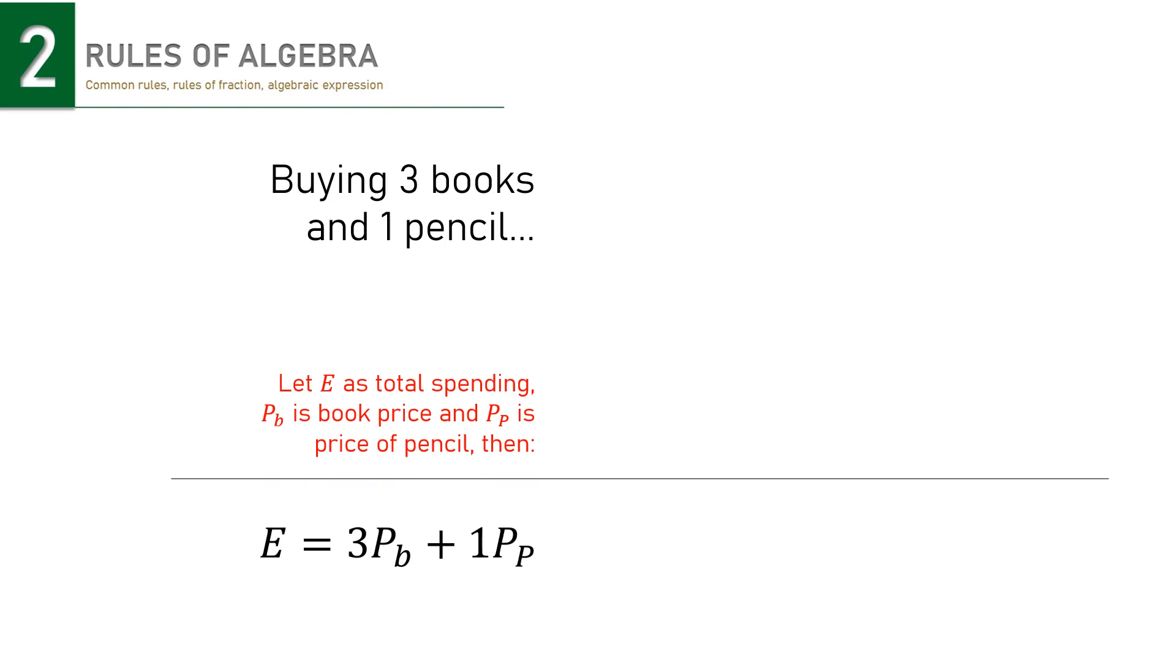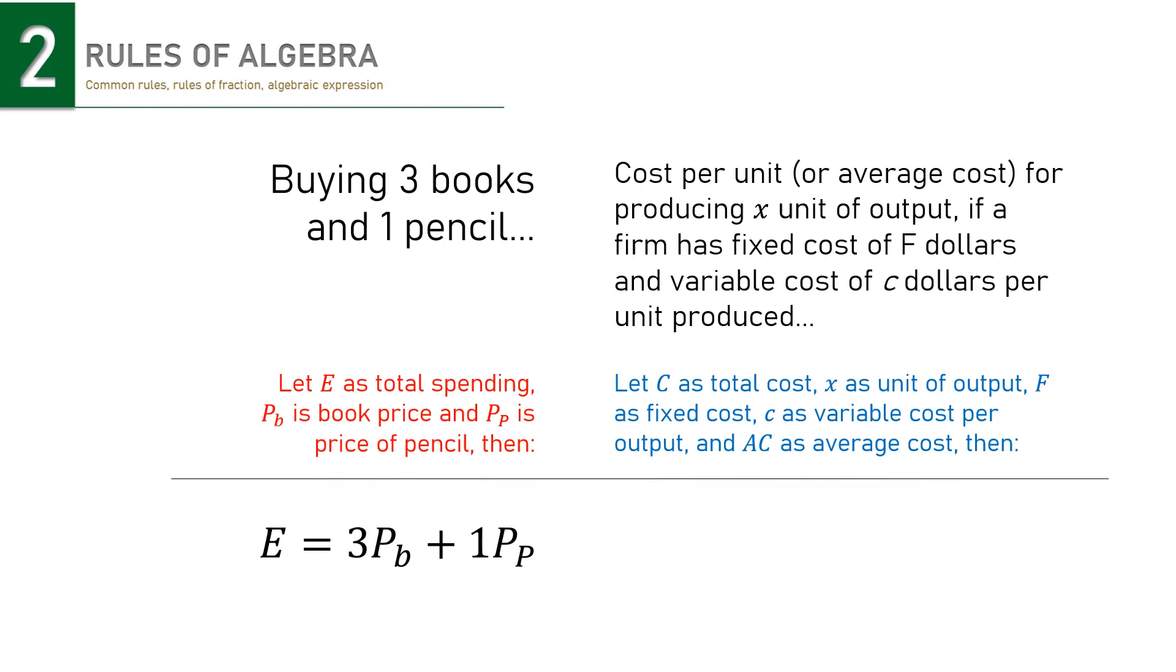The same is true for the second case. Since cost per unit is total cost per total output, x, then average cost is expressed as C per x. Fixed cost won't change no matter how many output is produced. So, it's just F. On the other hand, variable cost changes following the change in number of production. That's why, if c is the variable cost per unit of output, then cx is the variable cost when x unit is being produced. So, we get the last expression on the right, which is that after the algebraic simplification.